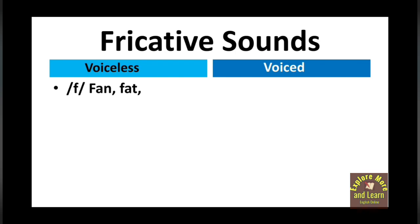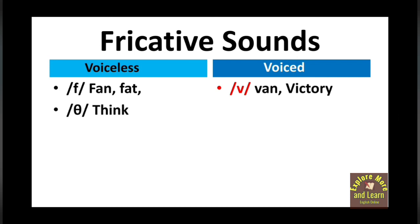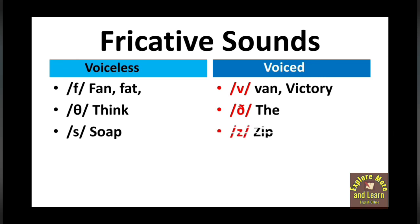/f/ is voiceless — that means when we pronounce this sound our vocal cords do not vibrate. But /v/ is a voiced sound, so when you pronounce it your vocal cords vibrate, like in 'victory'. /θ/ is voiceless like in 'think', /ð/ is a voiced sound like in 'the'. /s/ like in 'soap' is voiceless, /z/ like in 'zip' is voiced. /ʃ/ in 'ship' is voiceless, and /ʒ/ like in 'vision' is voiced. Voiceless means no vibration in your vocal cords; voiced means there is vibration.